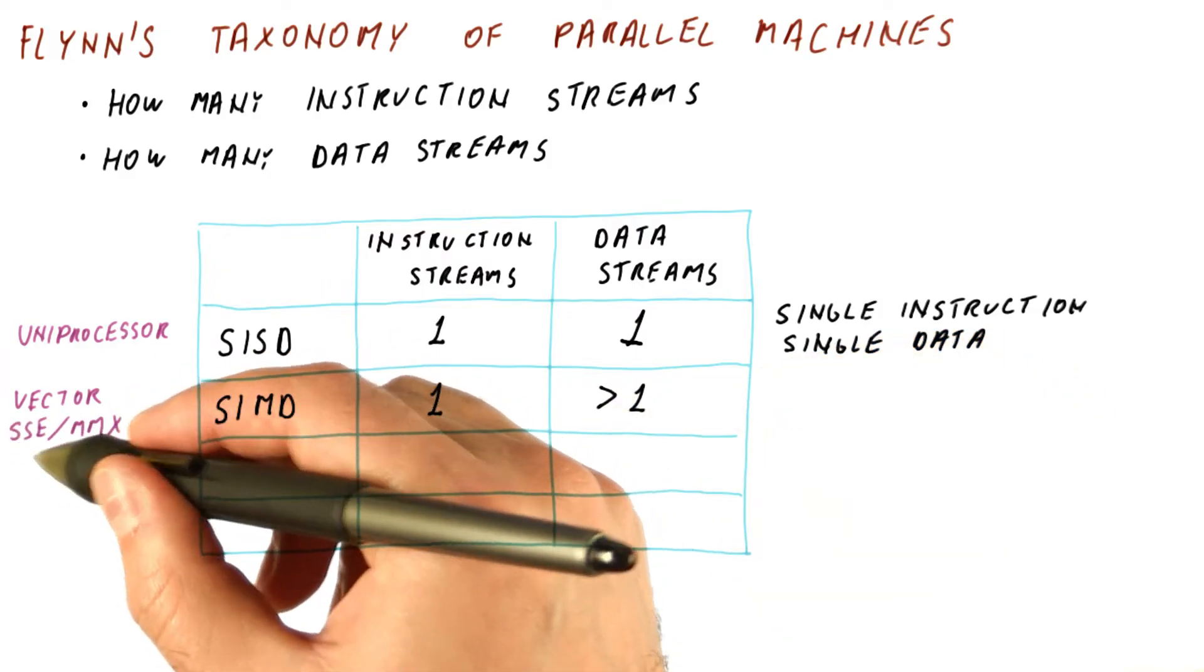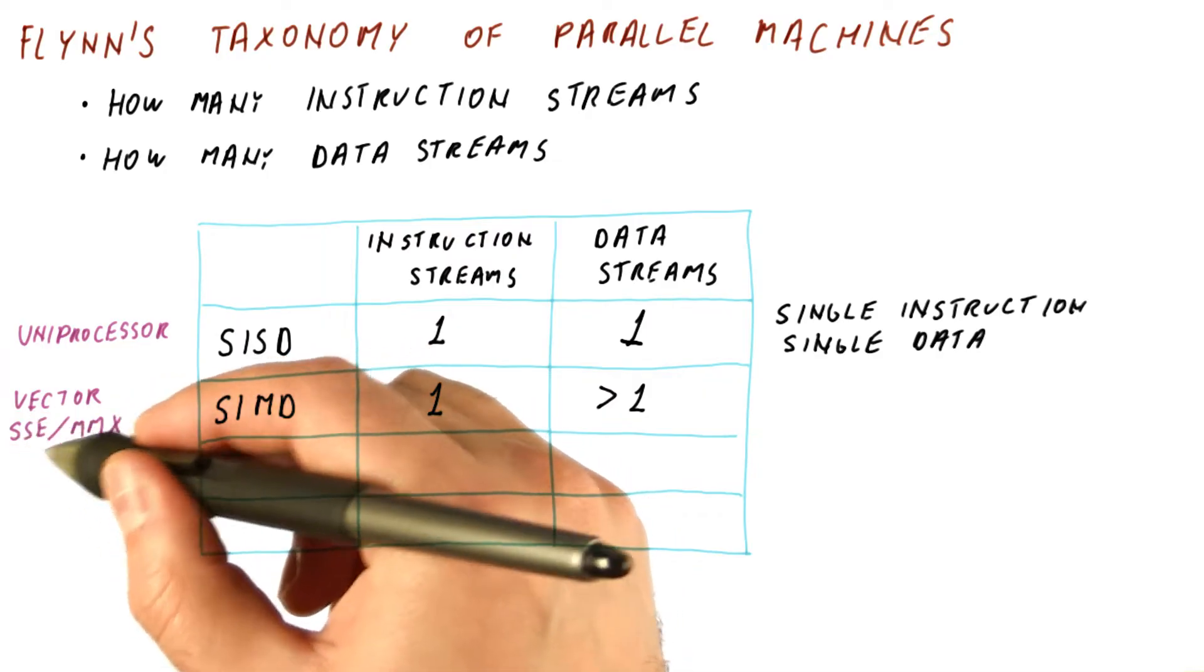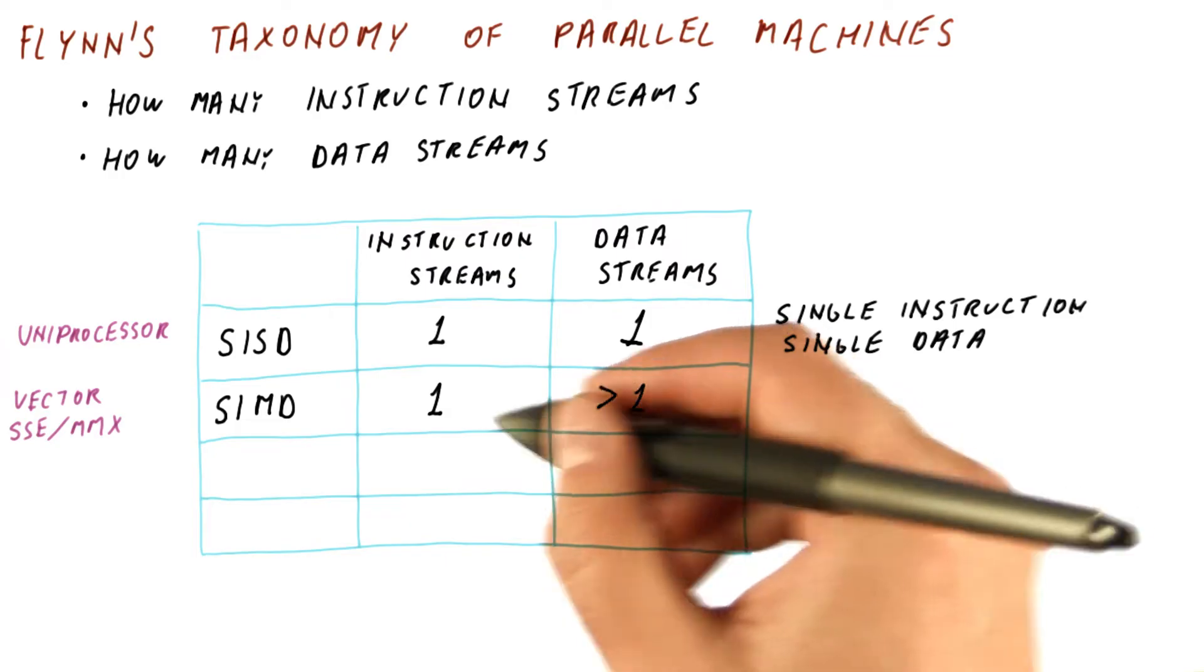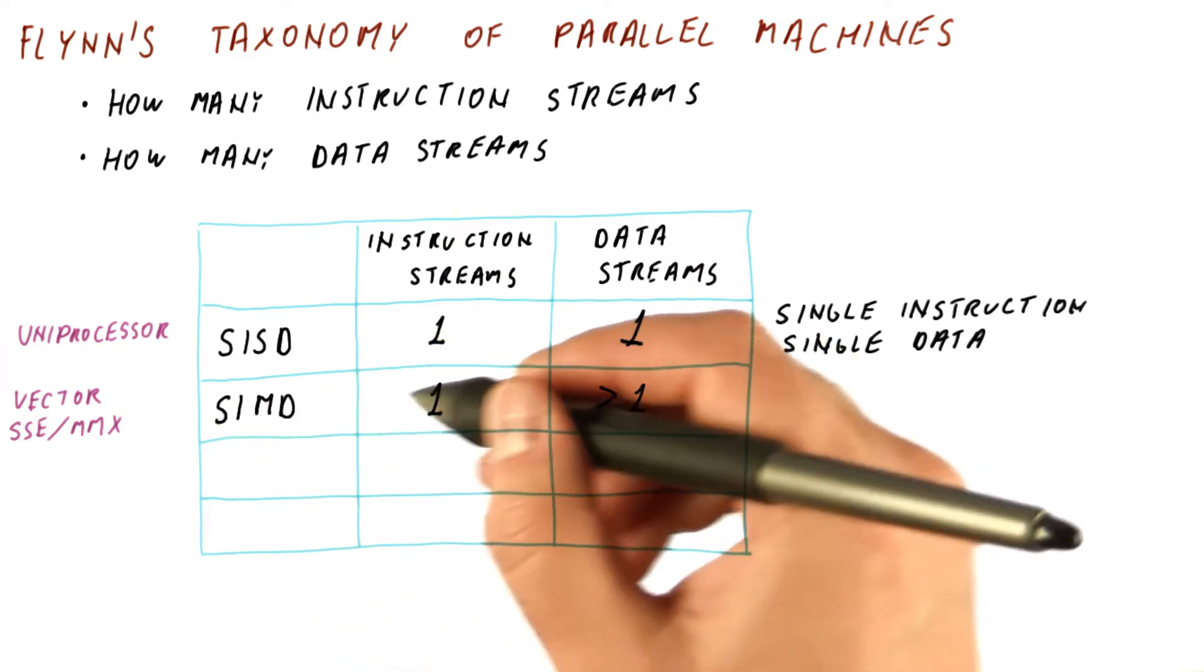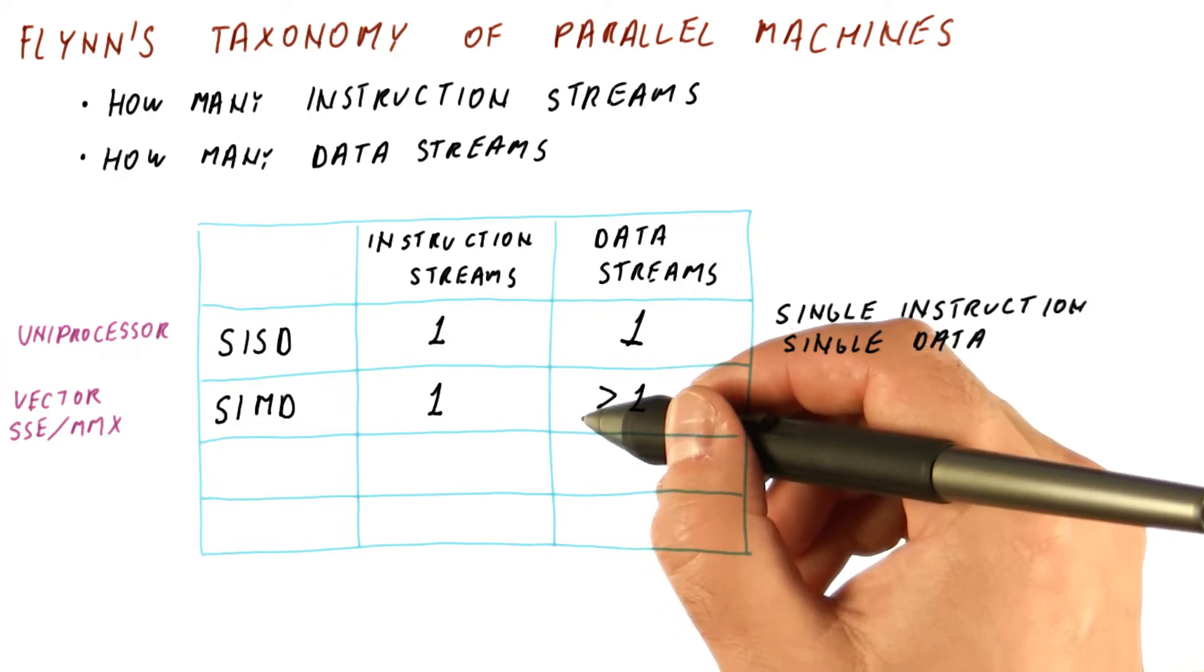Modern processors also have multimedia extension instructions, such as MMX or SSE123, and they are also an example of limited SIMD, where a single multimedia instruction will operate on maybe four or eight data items.